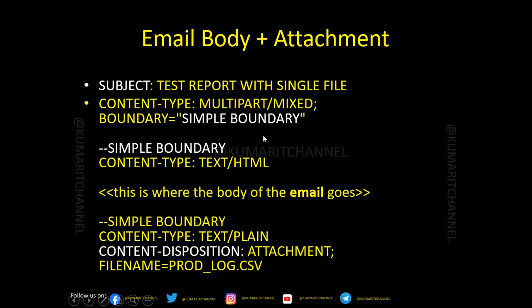For an email body with attachment, you need to add Content-Type as multipart/mixed with a boundary — a user-defined text string. Where you want the body of the email, specify Content-Type as text/html and place your text there. For an attachment, specify Content-Disposition: attachment with the file name — it can be a text or CSV file. Make sure to attach the specific file in the DD statement with the data you want to attach as a report.